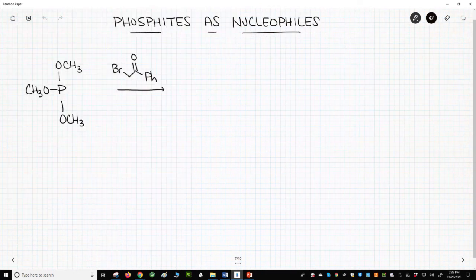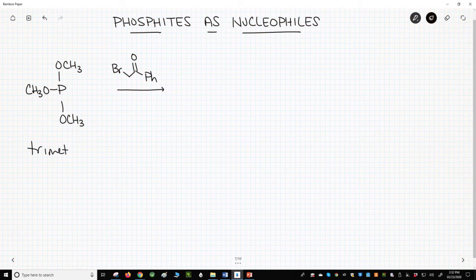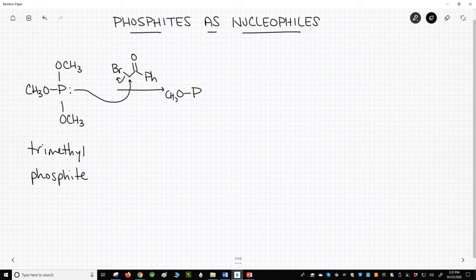Phosphites like trimethyl phosphite on the screen are also nucleophilic. They react with alkyl halides like this halide in alpha-bromo ketone. Here is our product.